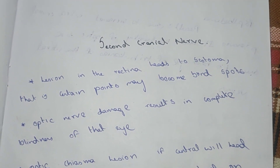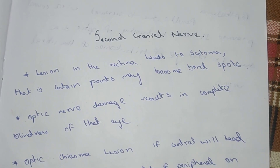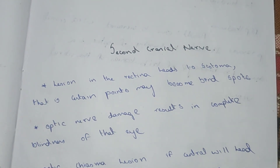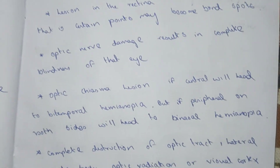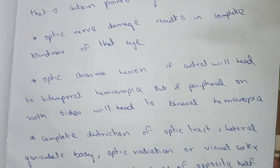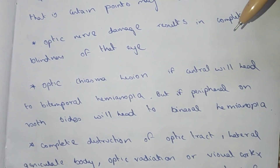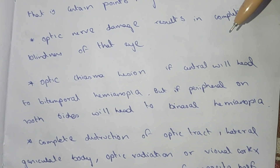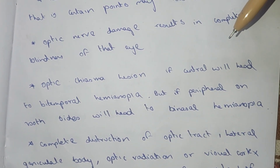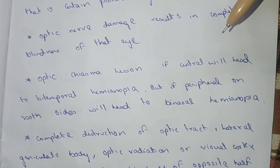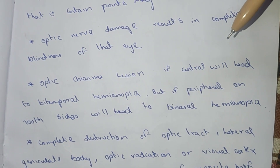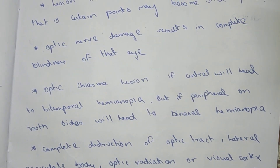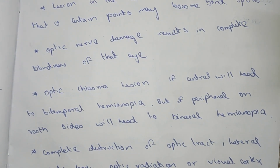When any optic nerve is damaged it leads to complete blindness. A lesion at the optic chiasma — centrally — leads to bitemporal hemianopia, while a lesion at the peripheral sides leads to binasal hemianopia.